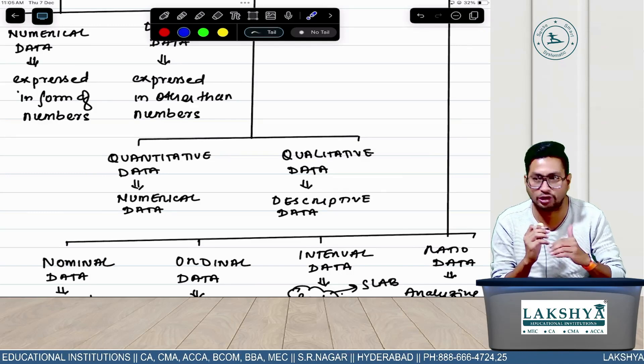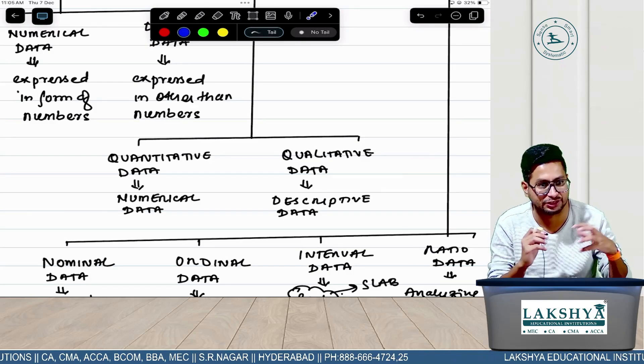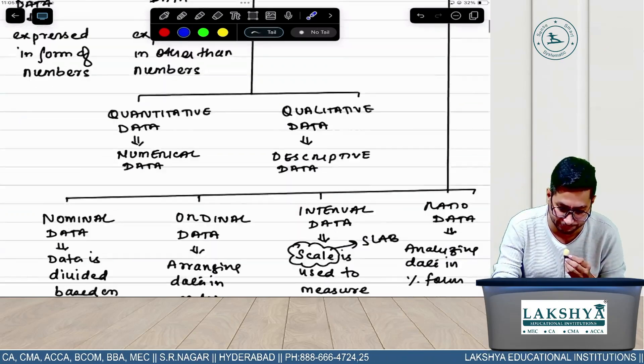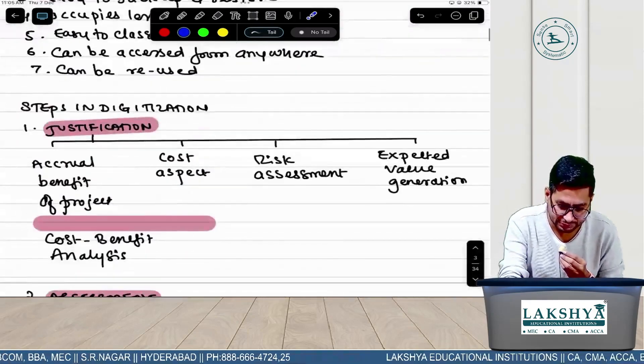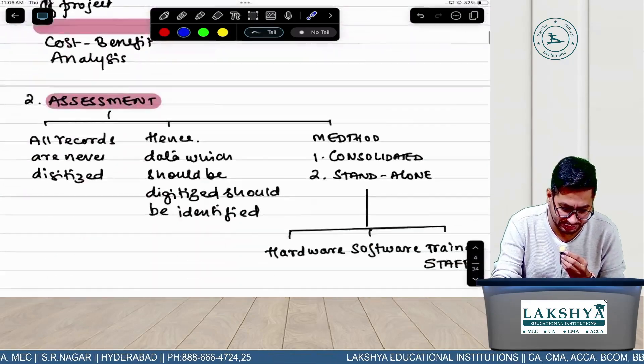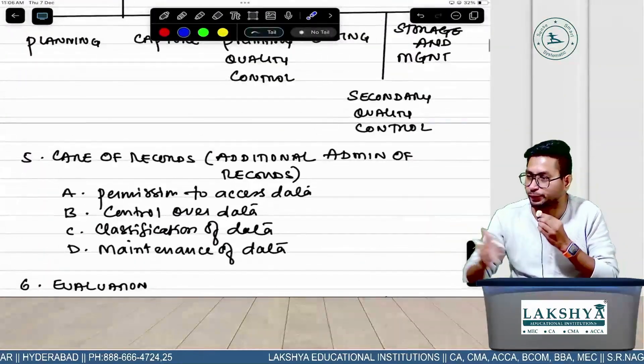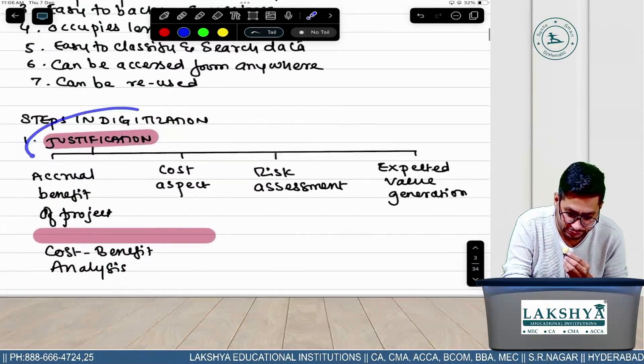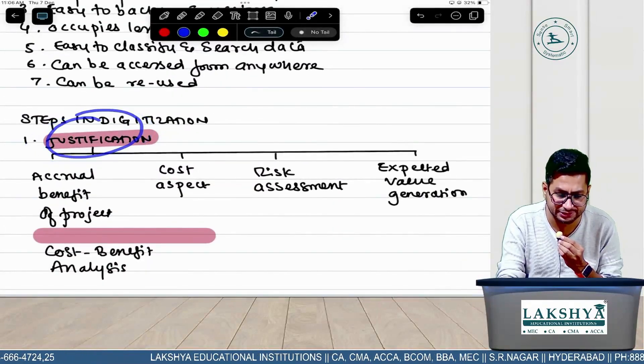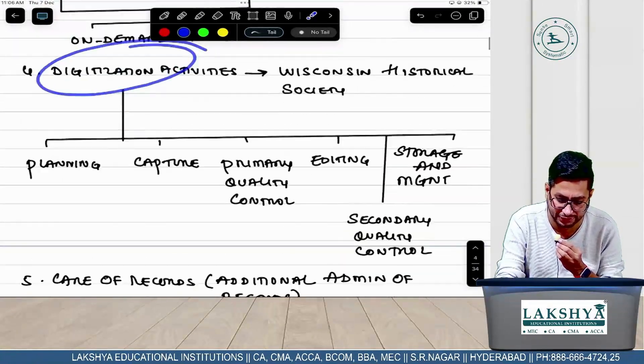Don't think quantity - quality is more important in exams than quantity. Big questions they can give in small marks also. Let's say, for example, steps in digitization has three, four, five, six points with multiple sub-points. Imagine if they ask this question for one mark - then what will you do?